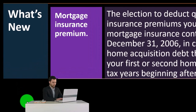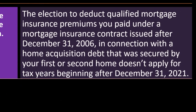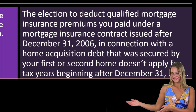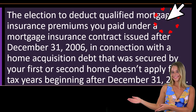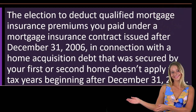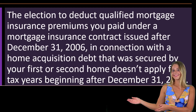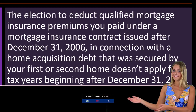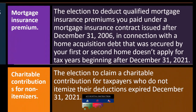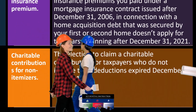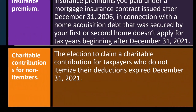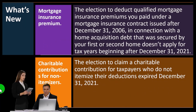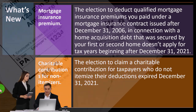Regarding what's new: the election to deduct qualified mortgage insurance premiums on contracts issued after December 31, 2006 in connection with home acquisition debt secured by your first or second home does not apply for tax years beginning after December 31, 2021. Additionally, the election to claim a charitable contribution for taxpayers who do not itemize their deductions expired December 31, 2021.